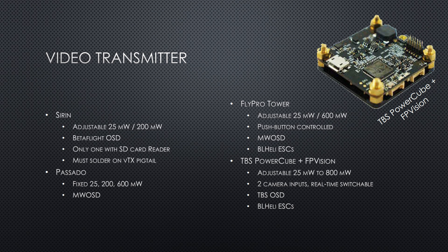If a video transmitter is the number one thing you're concerned with, these boards have a video transmitter. The Sirin is adjustable from 25 to 200 milliwatts, has the Betaflight OSD, and is the only one of these boards with an SD card reader. However, you have to solder on a VTX pigtail — it doesn't have a UFL or SMA connector. The Passato from Furious FPV has fixed 25, 200, and 600 milliwatts. It's a pre-release product, running MWOSD rather than Betaflight OSD, but it does have the ability to adjust the video transmitter from within the OSD.